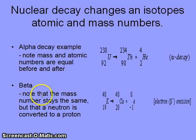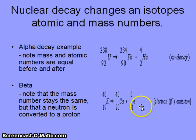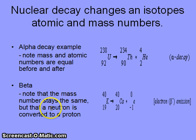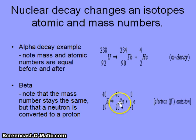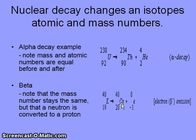In beta decay, the mass number stays the same — 40 to 40 — and the beta particle that is given off has no mass. A neutron becomes converted into a proton, so the atomic number actually increases during beta decay. The atom produced has a 1 to 1 ratio of protons and neutrons, and because this is a small atom, we are producing a stable 1 to 1 ratio.